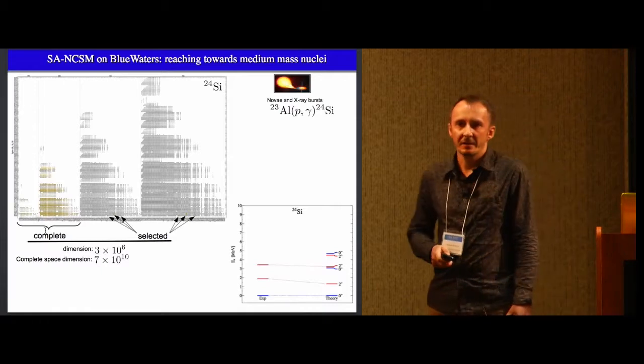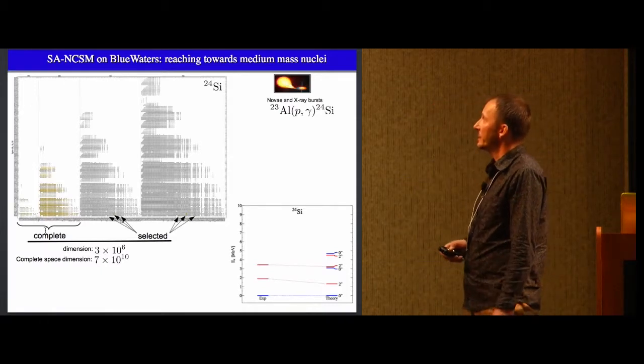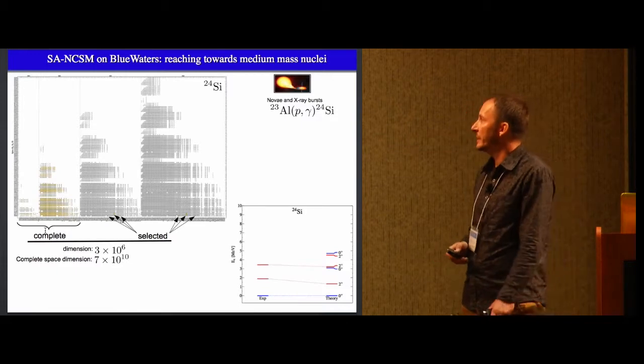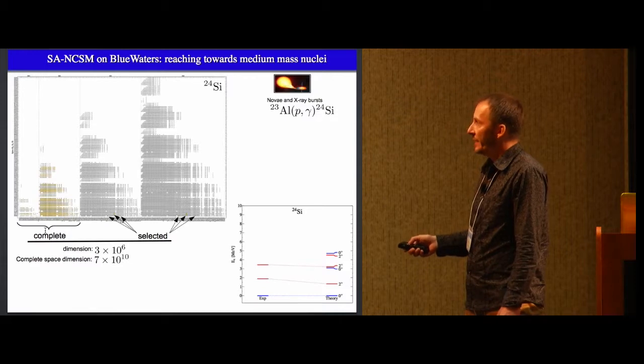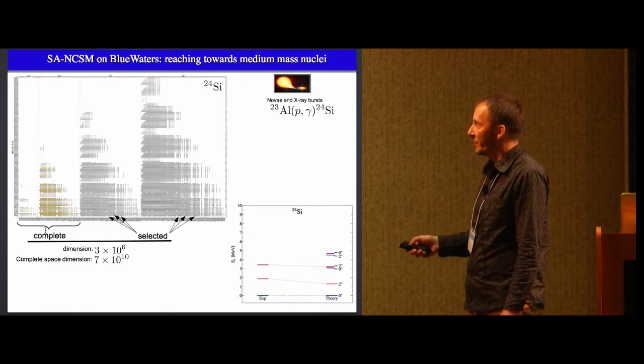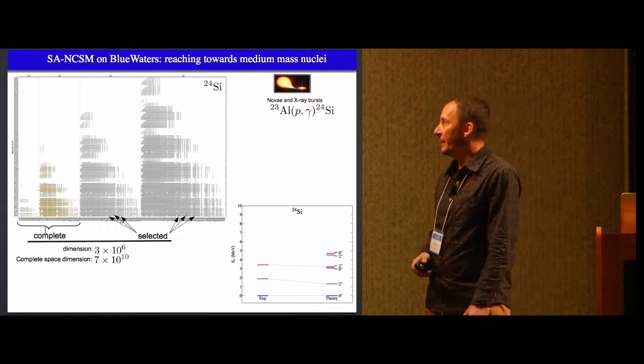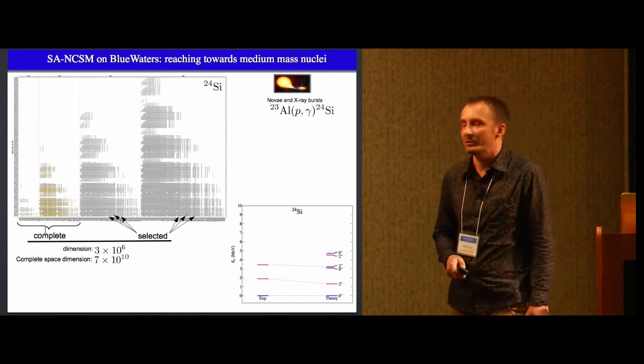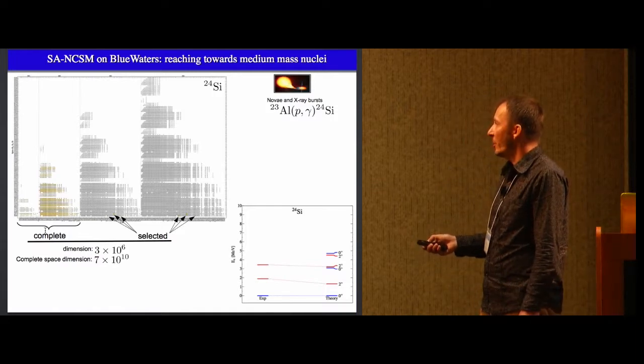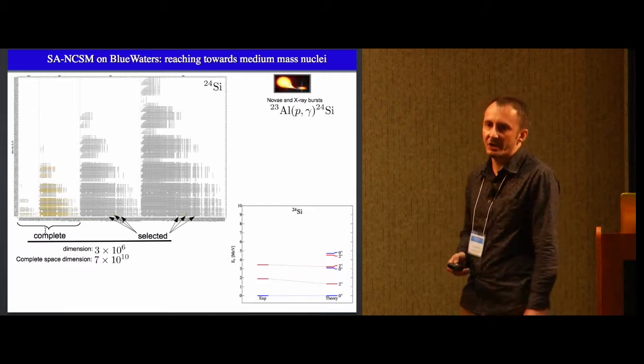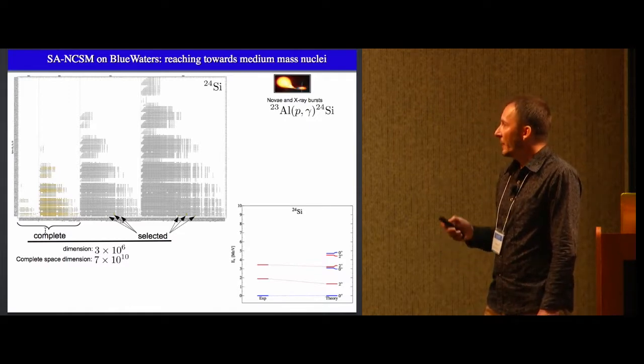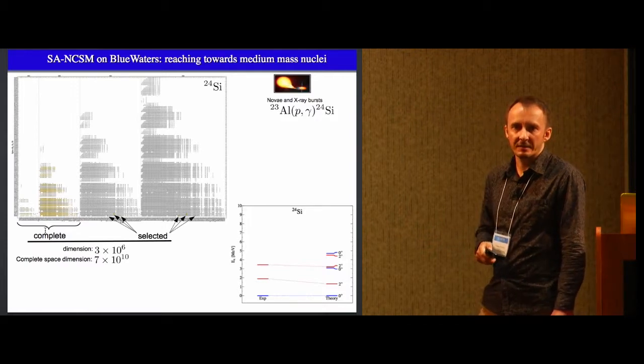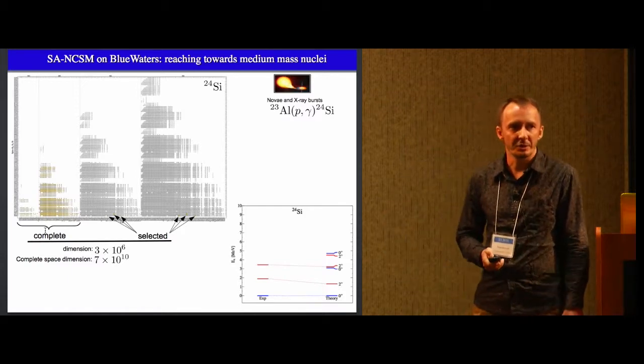So this is another nuclei we did calculation for. It's silicon-24, which is important nuclei for X-ray burst nucleosynthesis. This picture here just shows how we construct our model space. So whatever is yellow is in our model space. So you can see that we here pick only a few deformations and a few spins. Everything else is excluded from our model space. So the complete space would be 70 billion. However, dimension of our calculation was just 3 million. And this is comparison of experimental theory. And we were able to find some states which are not experimentally observed yet. Because it's quite challenging nuclei that's very unstable.